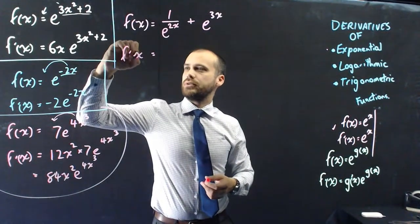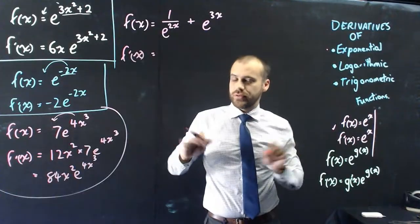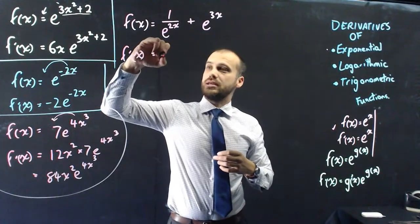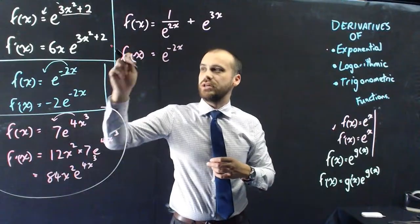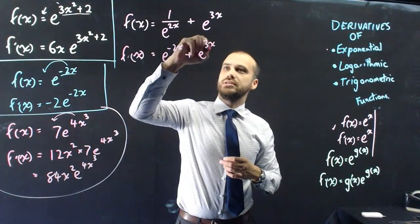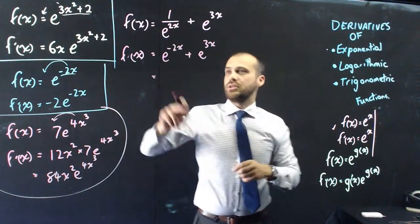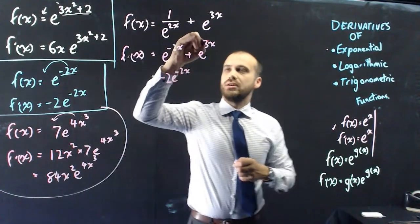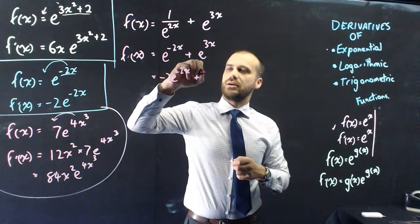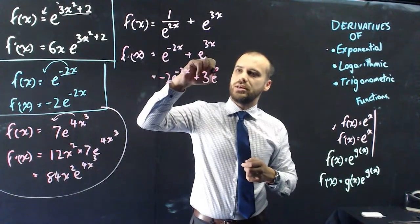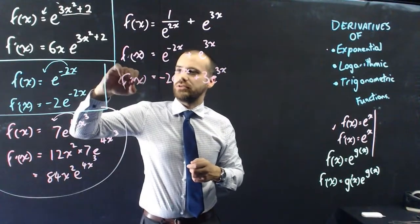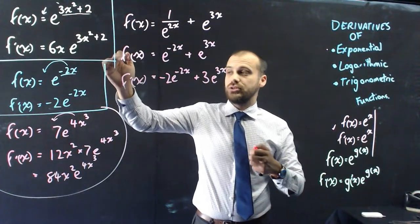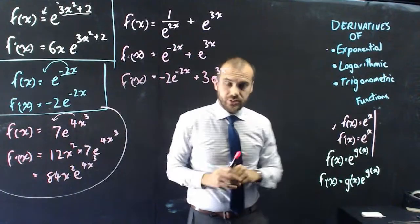Here's another question where e is on the bottom - we cannot do derivatives of stuff on the bottom, so we need to move it to the top. e to the 2x on the bottom becomes e to the negative 2x on the top. Now the derivative of negative 2x is just negative 2, so that comes out the front giving negative 2 e to the negative 2x, and the derivative of 3x is 3, giving 3e to the 3x. In the first step I set it up ready for the derivative, then I did the derivative.